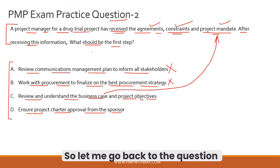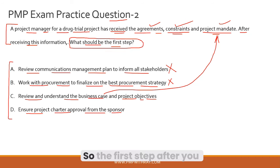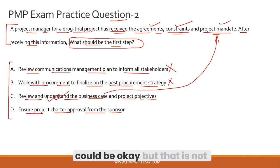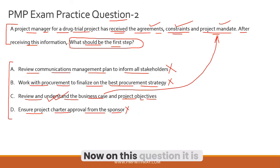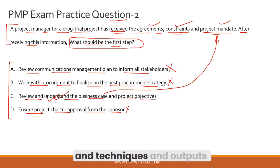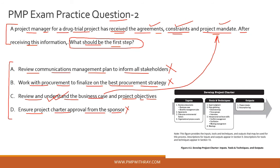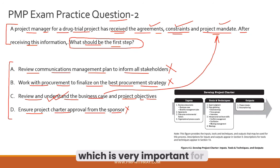Probably not — you've just received the agreements, constraints, and project mandate. It is a far-fetched assumption that a project charter has already been created. The question asks for the first step, so the first step after receiving these items is to review and understand the business case and project objectives. Getting project charter approval from the sponsor could follow, but you need the charter first. It is important to understand how ITTOs — inputs, tools, techniques, and outputs — work in PMP exam processes.